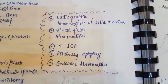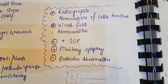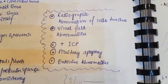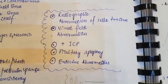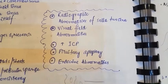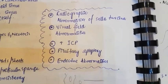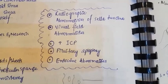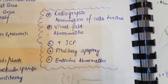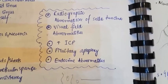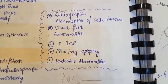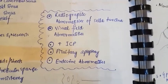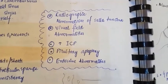Pituitary adenomas can be diagnosed radiographically, where we will see abnormalities in the sella turcica. Other findings include visual field abnormalities, increased intracranial pressure, pituitary apoplexy, and endocrine abnormalities.